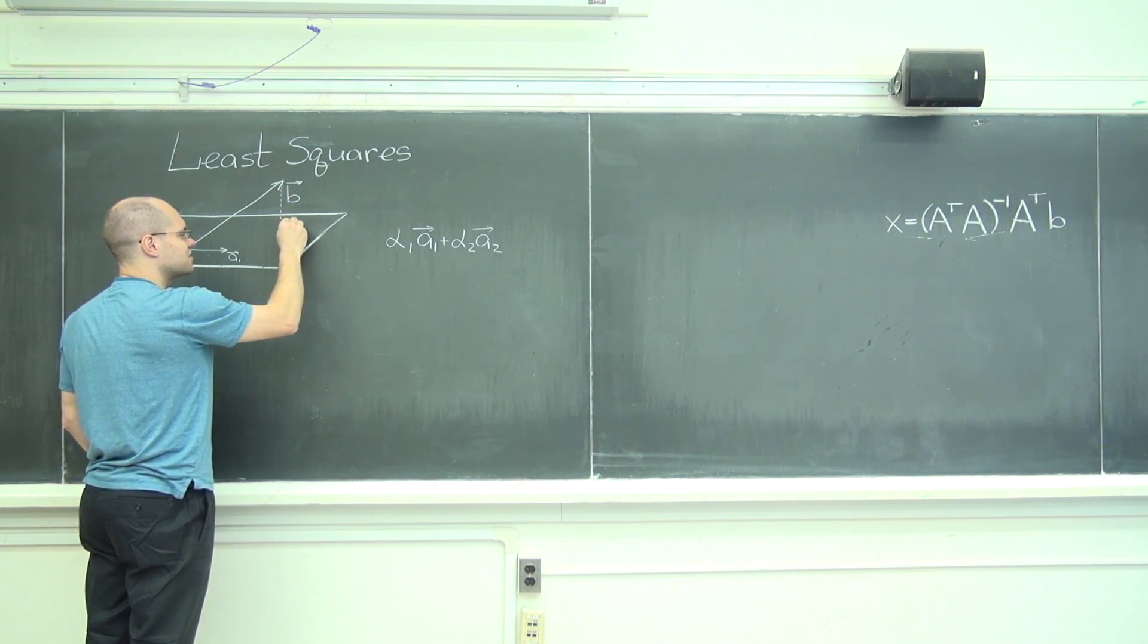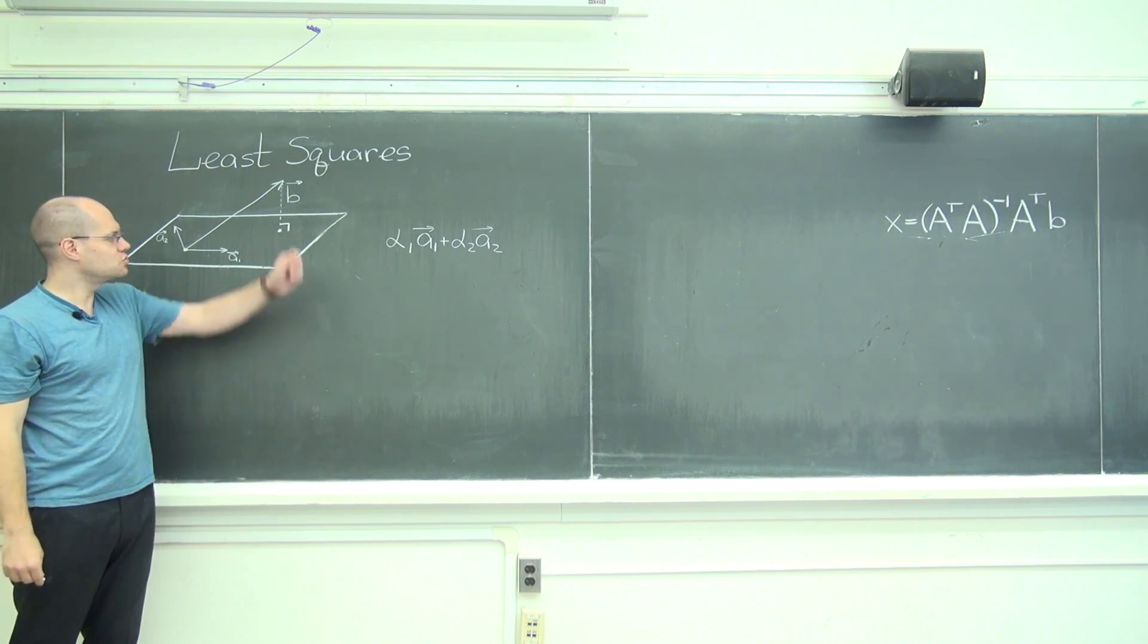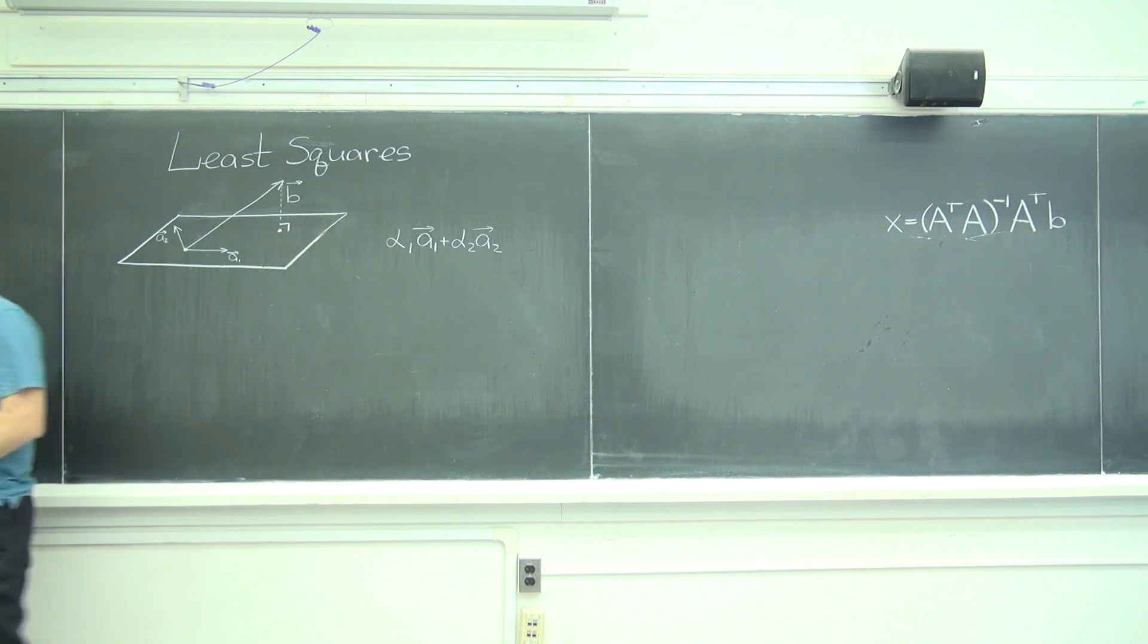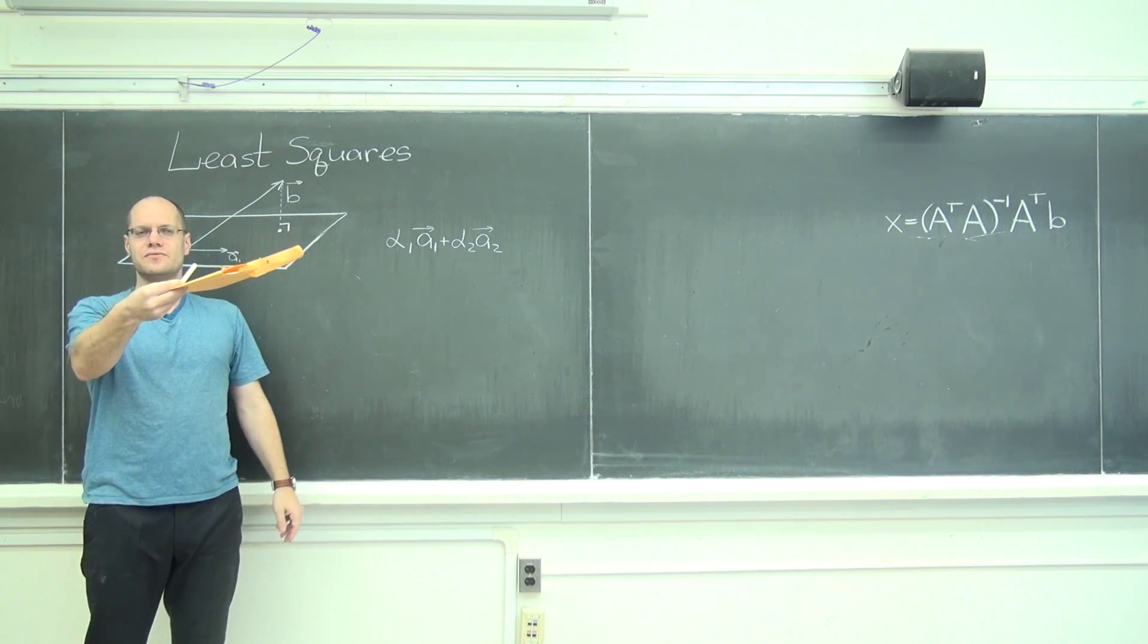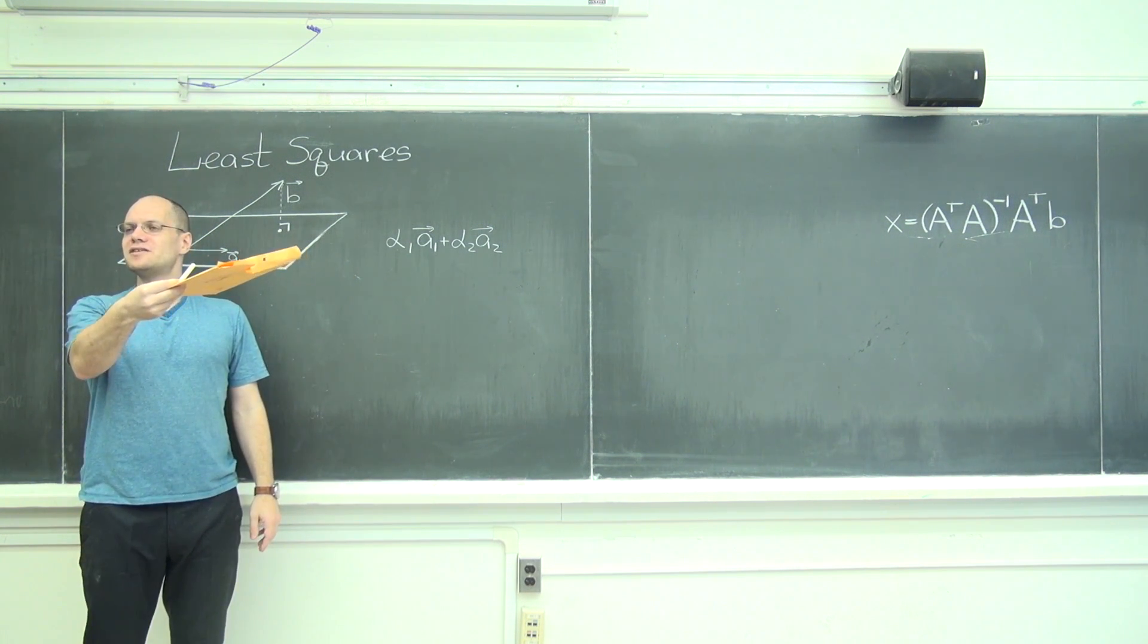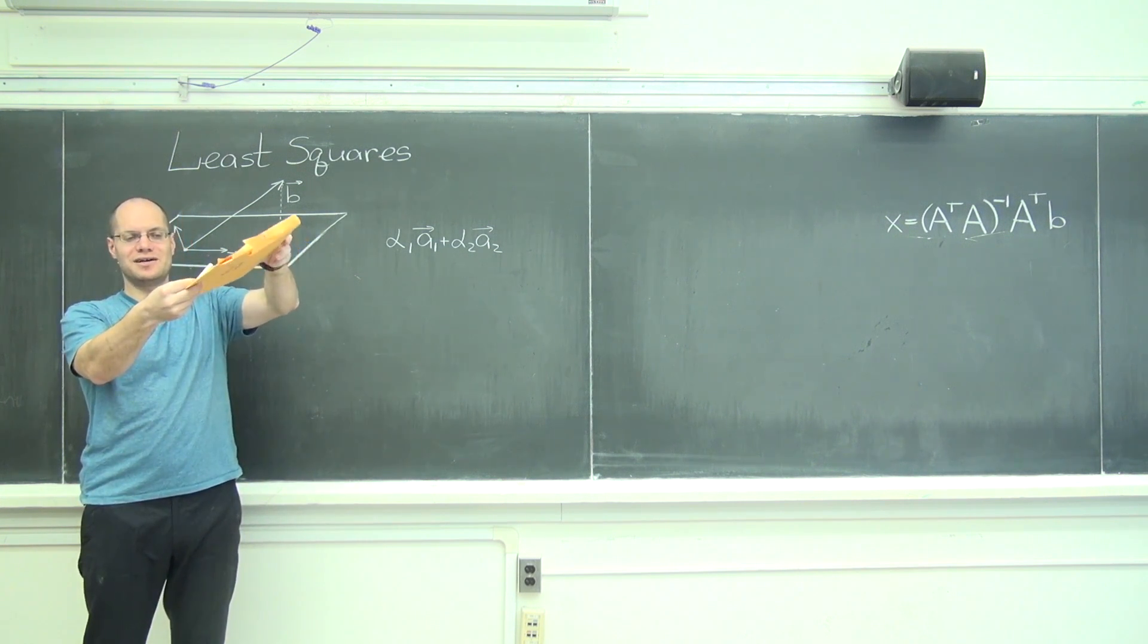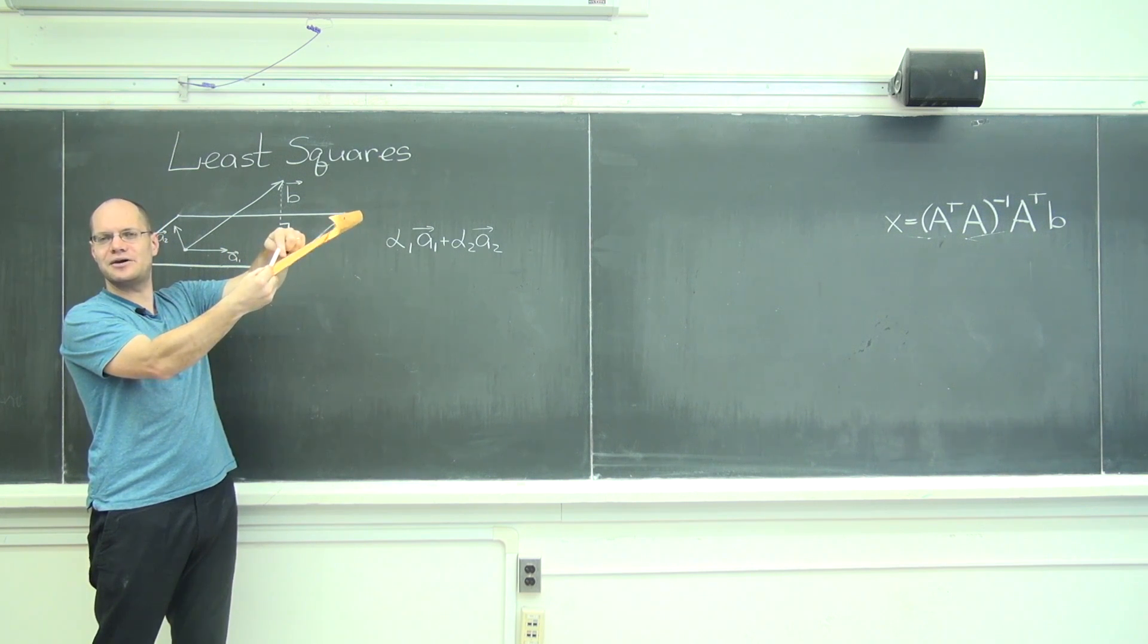So you drop a perpendicular onto the plane. It's entirely obvious geometrically. If this is my plane and this is my vector, which vector in the plane is the best approximation of this one? Well, it's the one right there, right underneath the tip. Just go straight down.